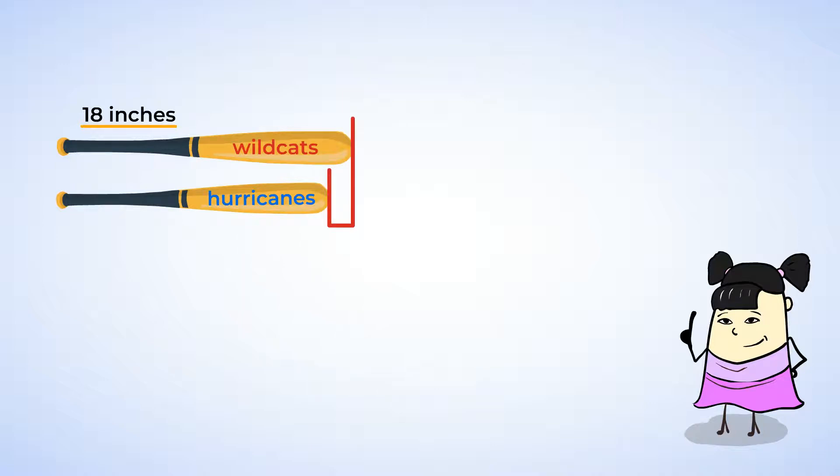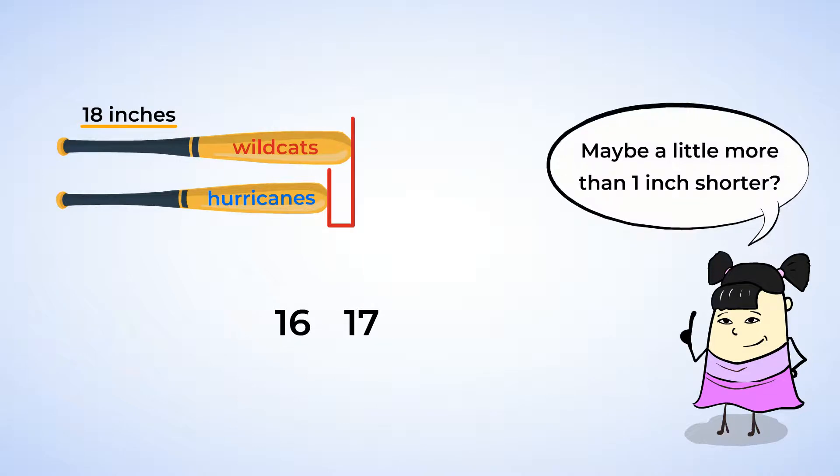The Hurricanes bat is shorter than the Wildcats bat. It's only a little bit shorter, though. Sometimes more than one estimate makes sense. We could estimate that the Hurricanes bat is 17 inches or 16 inches, and both would be good estimations. It seems like maybe it's a little more than one inch shorter, so let's estimate that the Hurricanes bat is 16 inches.